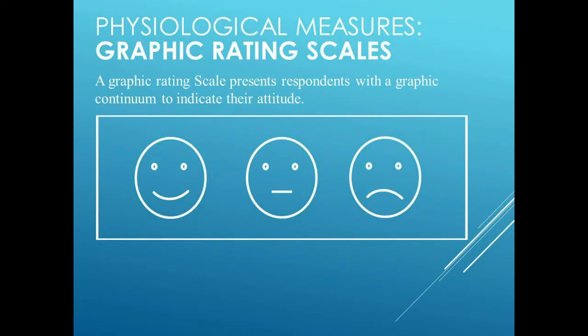We also have the graphic rating scale, which presents pictures — normally images of one kind or another — that people can select. This is really good for young kids or people with low literacy levels. For example, with happy, indifferent, and sad faces, we could ask 'What do you think of Sesame Street?' and people select the face that matches their attitude. That tells us their attitude based on their response to the graphic rating scale.